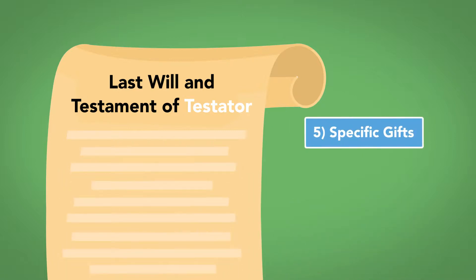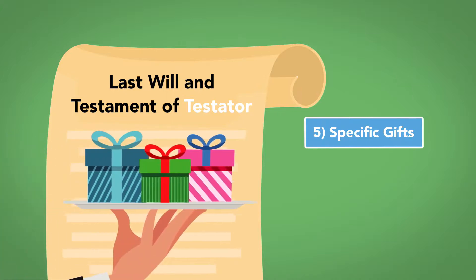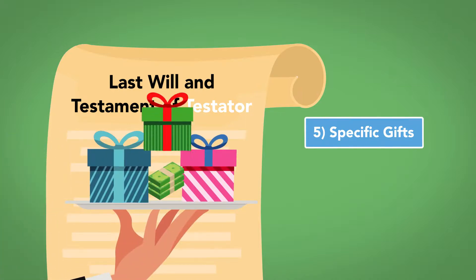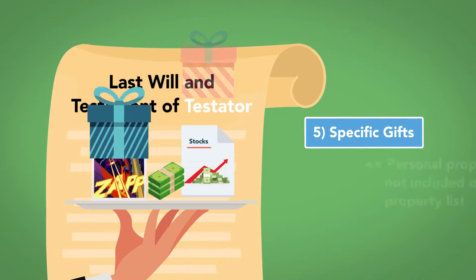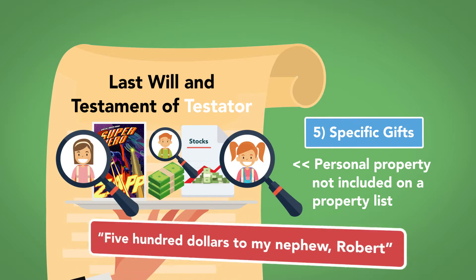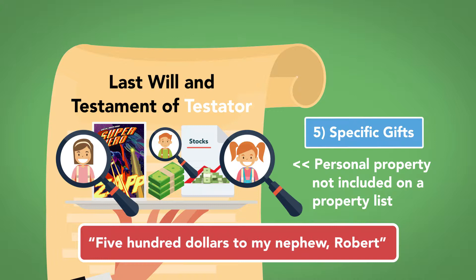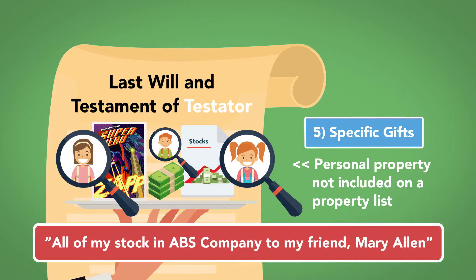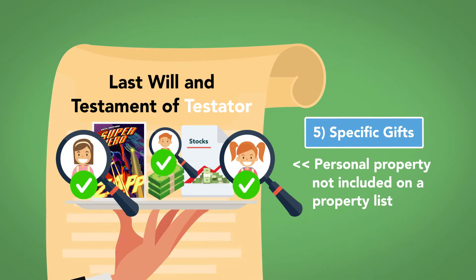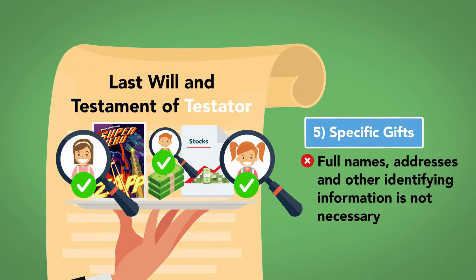Number 5: Specific Gifts. Often, testators want to give specific gifts to beneficiaries. These can include gifts of cash, stock, and other personal property not included on a property list. The will can identify the gift and to whom it is to be distributed, with wording such as '$500 to my nephew Robert,' or 'all of my stock in ABS company to my friend Mary Allen.' Any effective identification is sufficient, and full names, addresses, and other identifying information is not necessary.